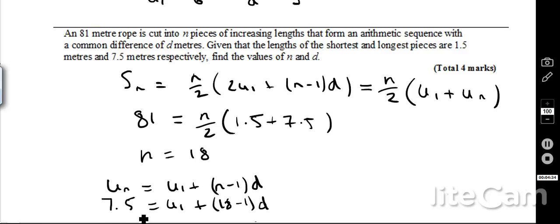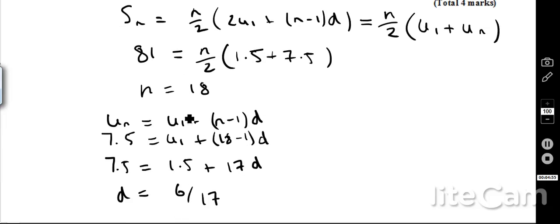In this case, the nth term that I'm looking at, the biggest term was 7.5 metres, and I arrived at that by doing the first term plus, there was 18 bits in total, so 18 take away 1 times by d. Then just filling in the blanks, I also know that the first term was 1.5, therefore, I've got 7.5 equals 1.5 plus 17 times something, the common difference, therefore, the common difference is 6 over 17.